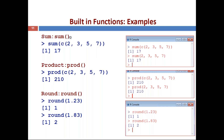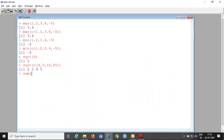For the sum function, the syntax is sum() and you can give numerical values directly: sum(2, 3, 5, 7) adds all values, or use sum(c(...)) with a vector — both give the same result. Demonstrated live: sum(1, 2, 3, 4) gives 10, and the same using c() also gives 10.